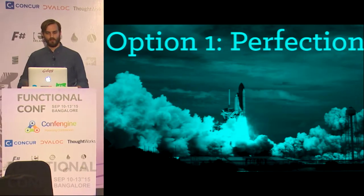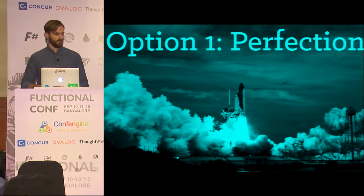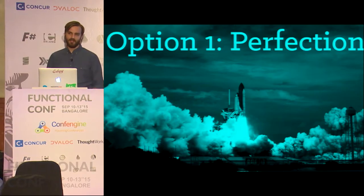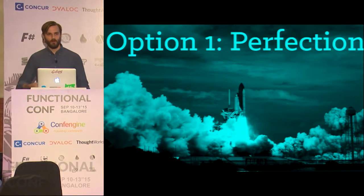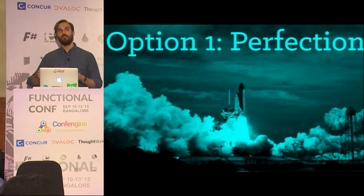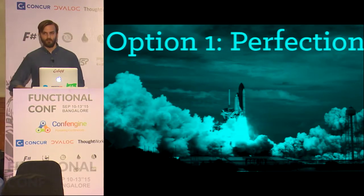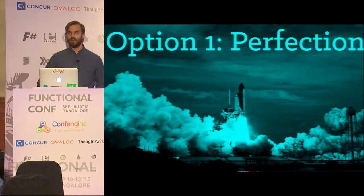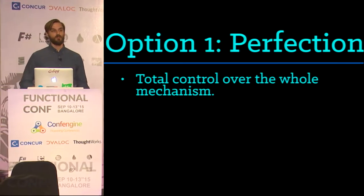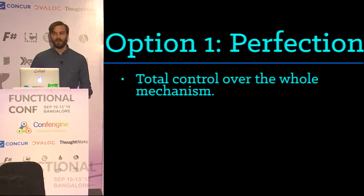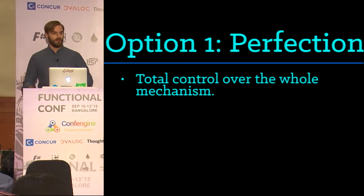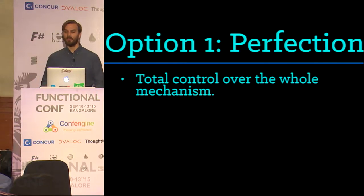The people that made this system were a contractor in Florida — they were the only software group at the time designated by the United States government as being able to create perfect software. Perfect has a very legal definition in the United States: one defect found per every 100,000 hours of operation lifetime. The space shuttle never flew for 100,000 hours, so there was never a software defect. What are your options for total perfection? First, you have to have total control over the mechanism. The space shuttle is a completely custom-made device, so no matter what you needed to know, you could find it out — this is obviously not something we all have.